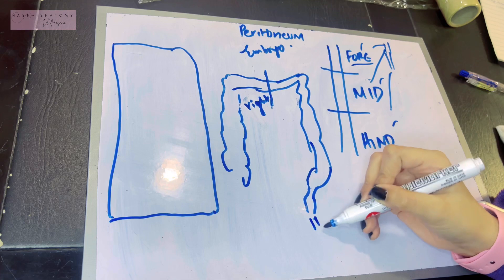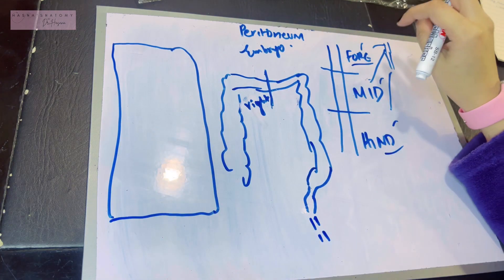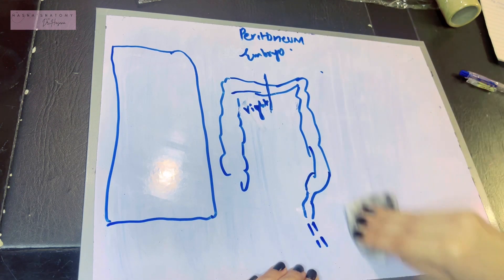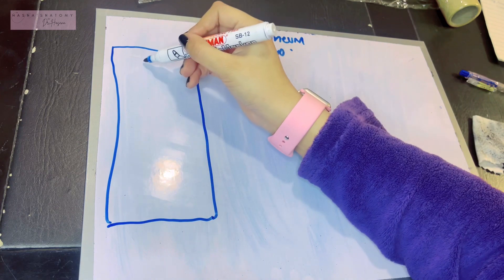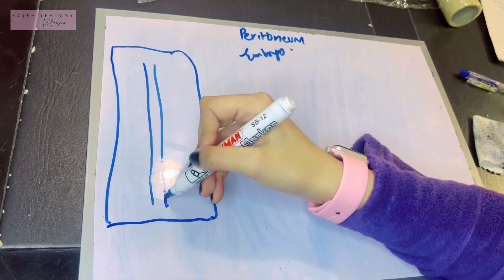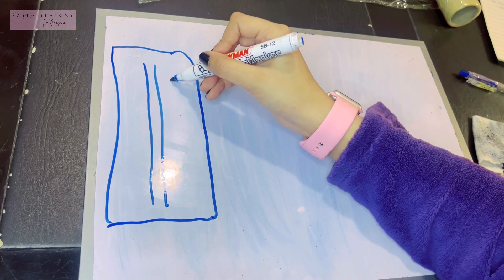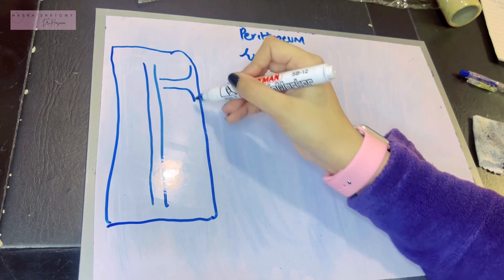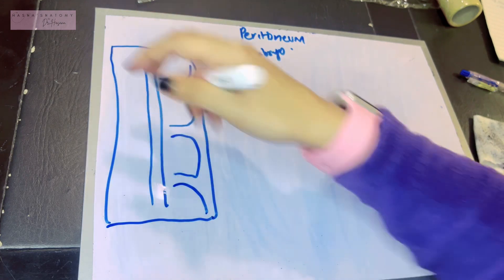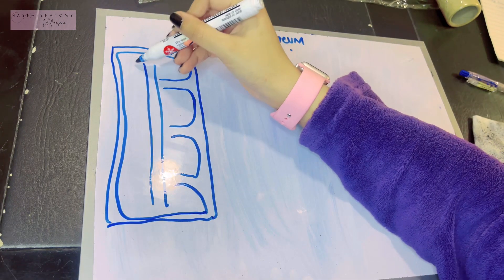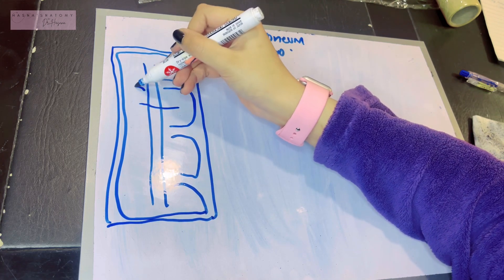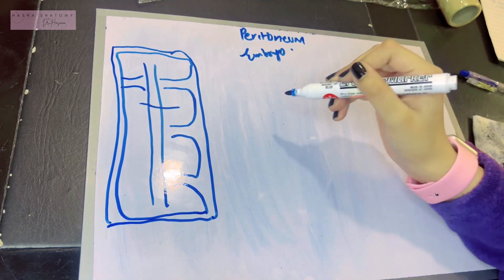The distal part of the rectum and anal canal comes from the anorectal canal — that's a story for another day. All parts of the gut tube are suspended by their own mesenteries, or folds of peritoneum, within the abdominal cavity. In the case of the foregut, there is not just a dorsal but also a ventral part of this mesentery.